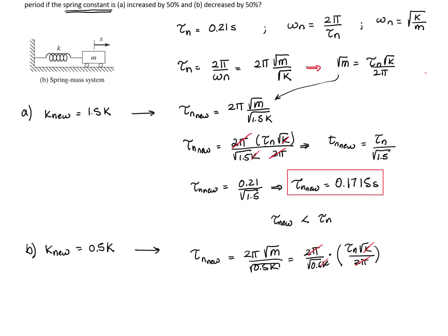And here we see that the new period will be the original period divided by square root of 0.5. That gives me a value of 0.2970 seconds.